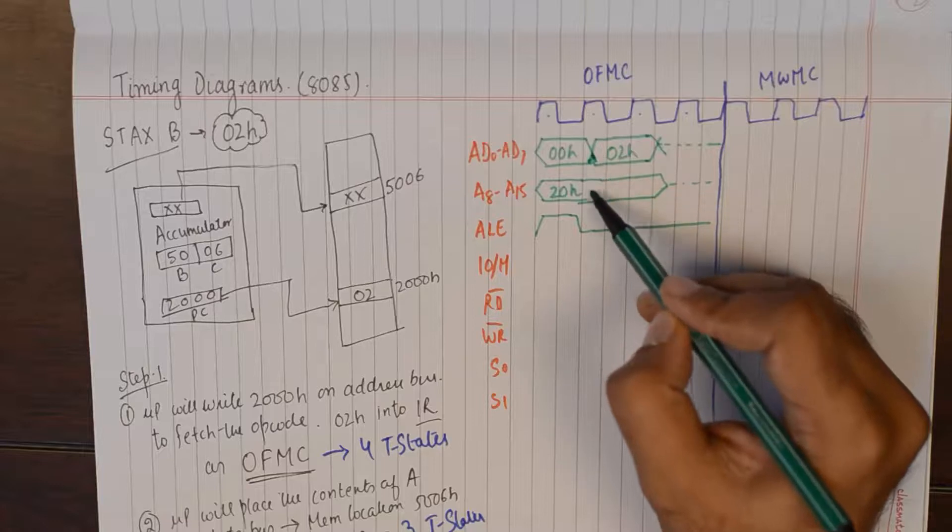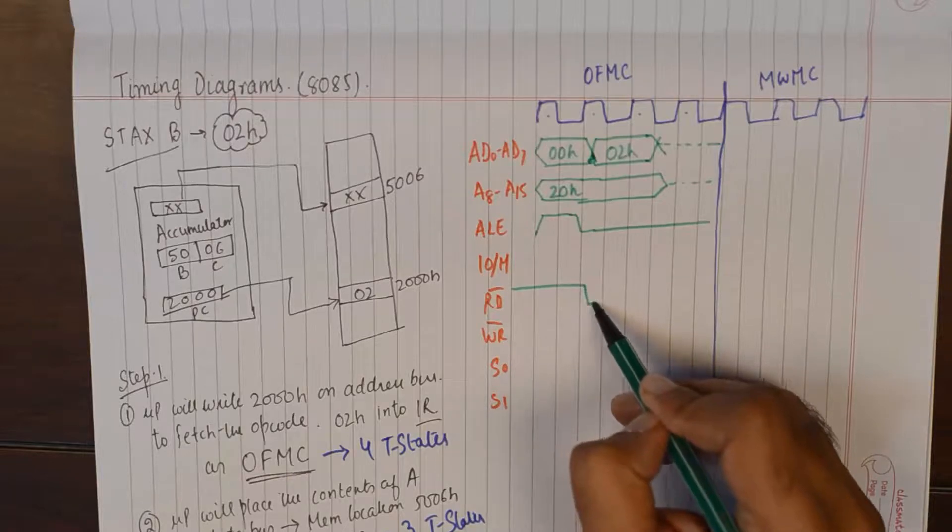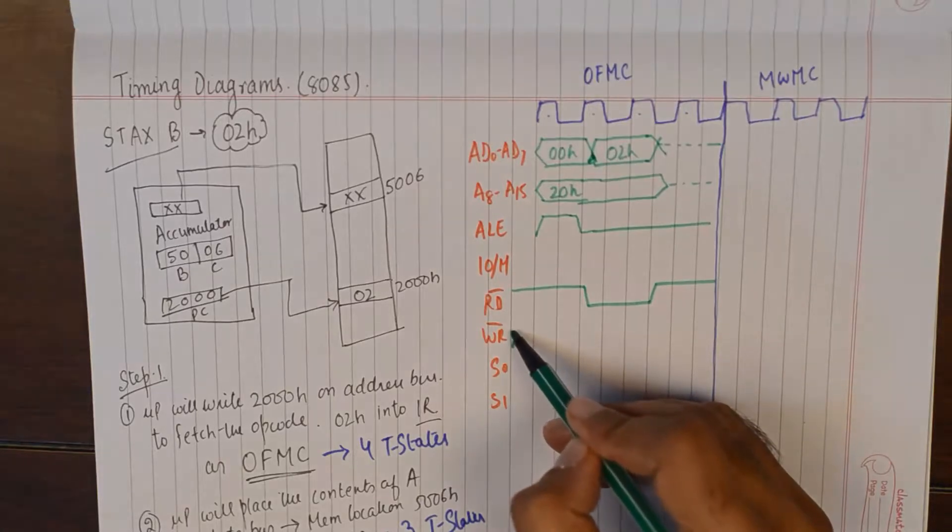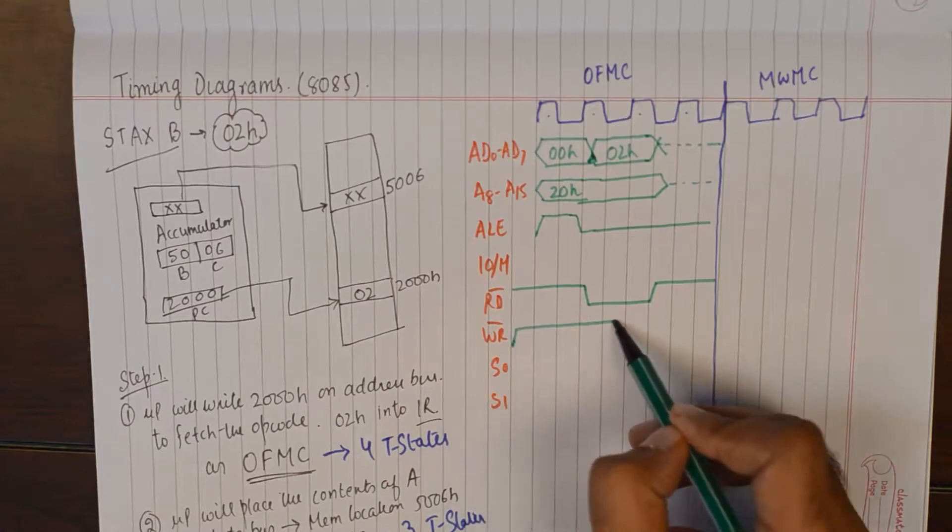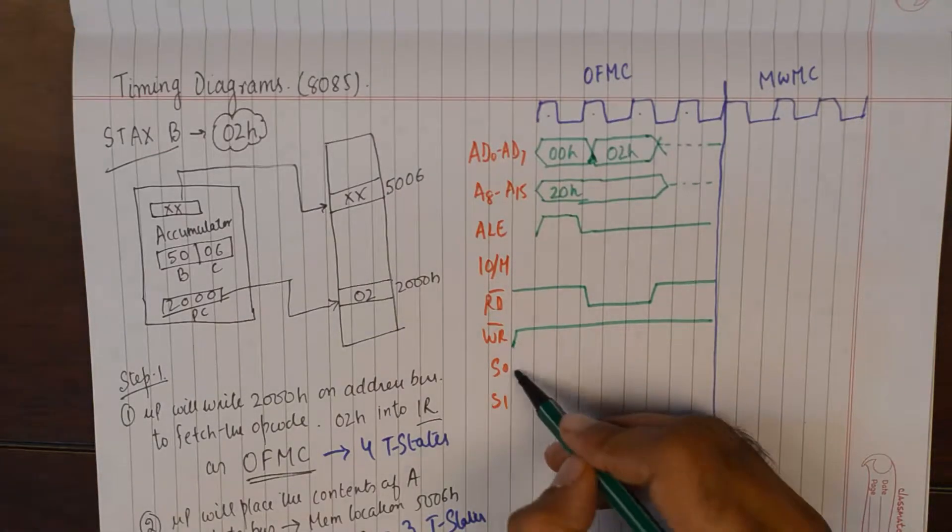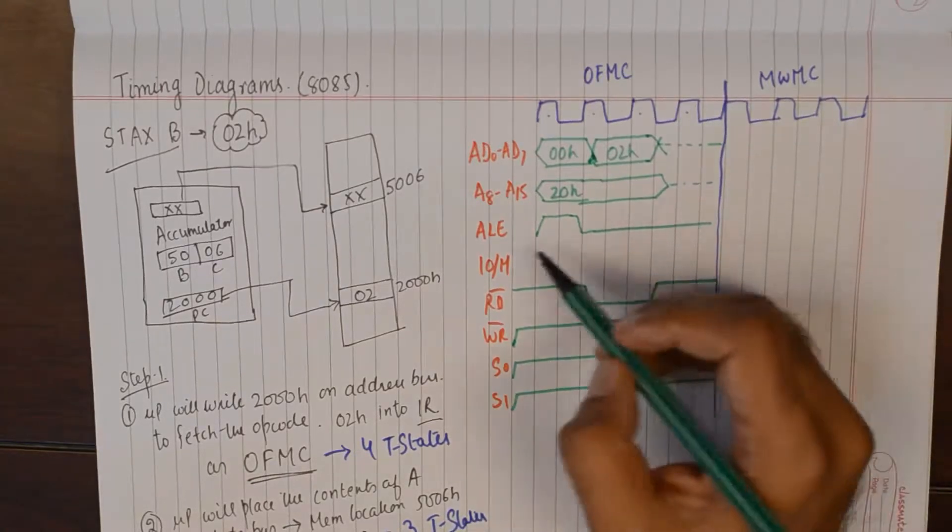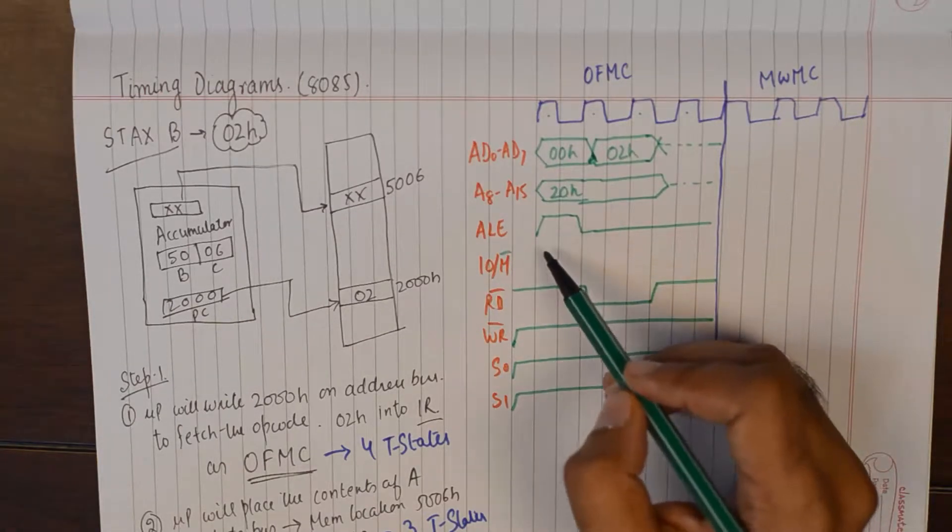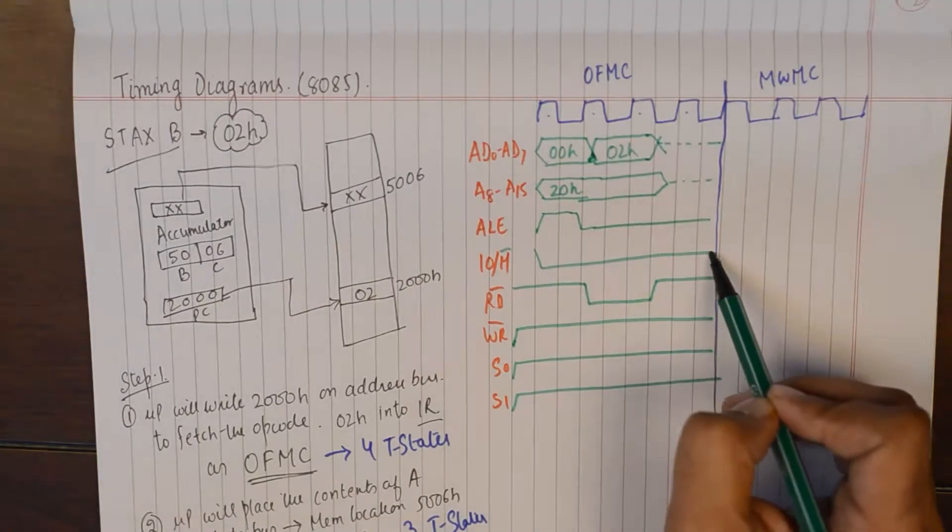Bringing the content into the microprocessor would require us to make the read line active. The write would remain inactive. And S0 and S1 will remain 1, 1. And of course this is a memory related operation.